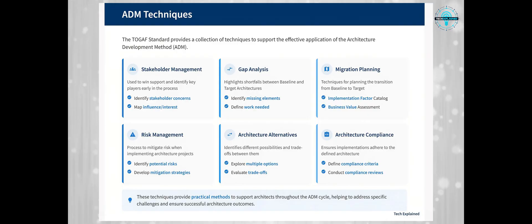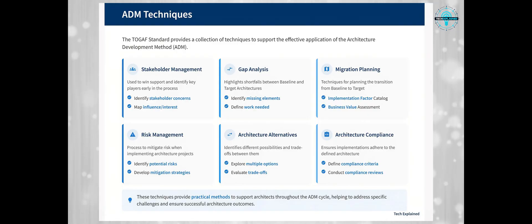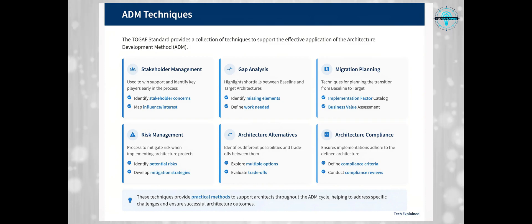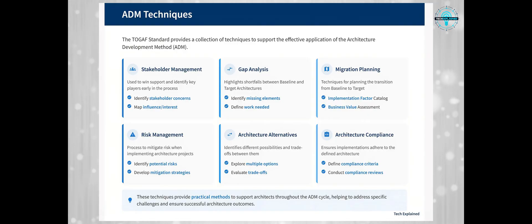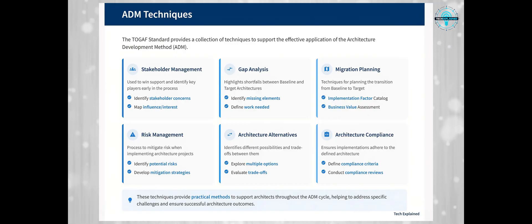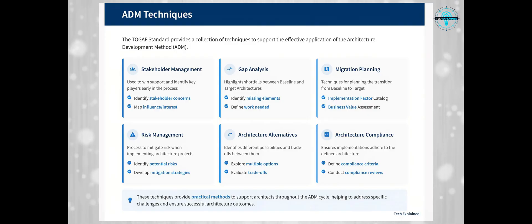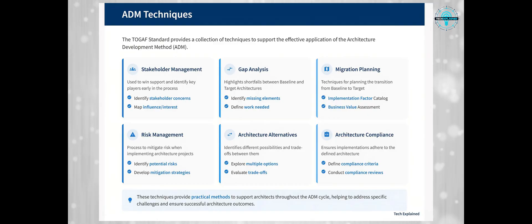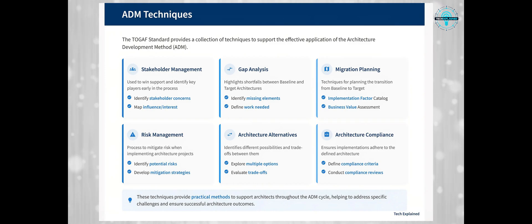Risk management is another important technique. Implementing architecture projects involves risks, and this technique helps you mitigate those risks — identifying potential problems before they happen and having plans to address them. Finally, architecture alternatives and trade-offs. Rarely is there only one way to achieve your architectural goals. This technique helps you identify alternative target architectures, build understanding of different possibilities, and identify trade-offs between them. These techniques provide practical methods to support architects throughout the ADM cycle, helping to address specific challenges and ensure successful architecture outcomes.